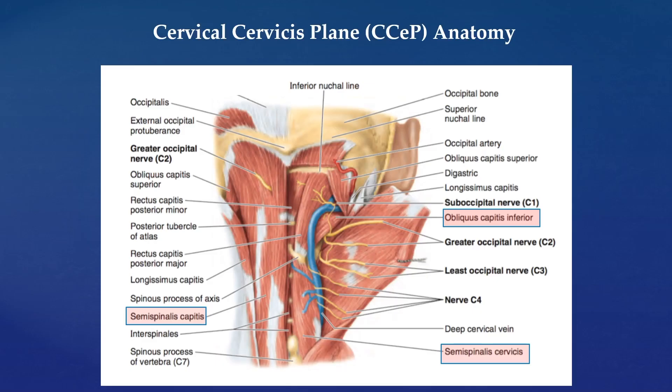This is the anatomy of the posterior cervical region. On the left side, you can see the semispinalis capitis muscle. On the right side is the cervical semispinal plane, which is anterior to the semispinalis capitis muscle. This is a continuous plane that extends from the occiput to the CCEP level. The dorsal rami of the cervical spinal nerves run through that plane and provide branches that innervate the posterior cervical muscles and the skin.